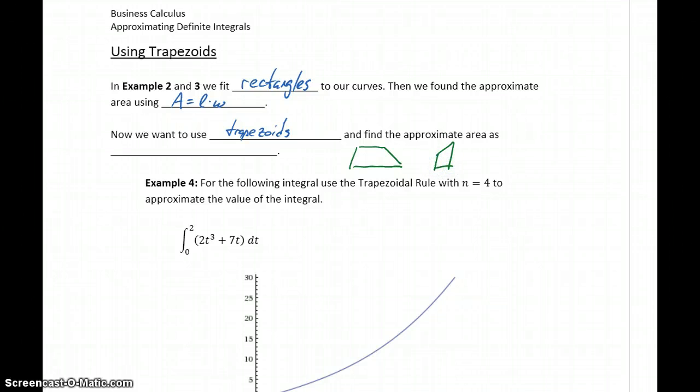Looking at using trapezoids, we can apply the same idea using multiple trapezoids over however many sub-intervals, and then calculate the area of each individual trapezoid using area equals one-half height times the smaller base plus the larger base.